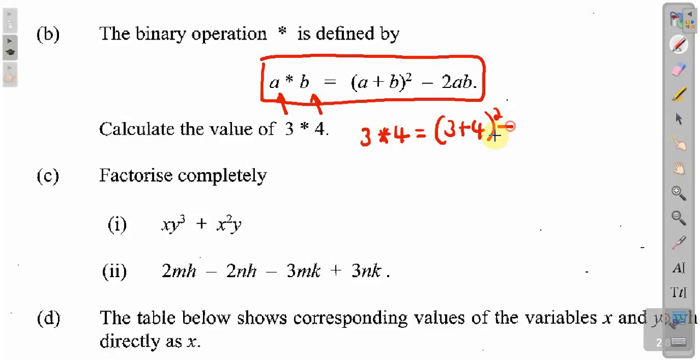Square minus 2 times a which is 3 times b which is 4.